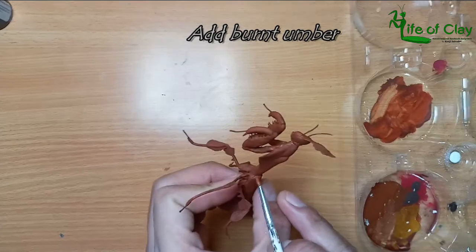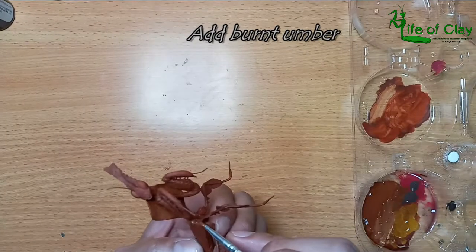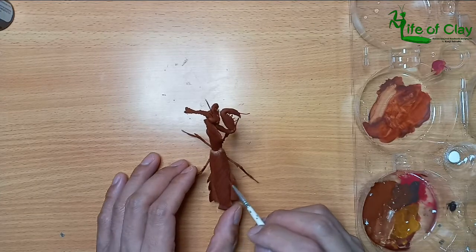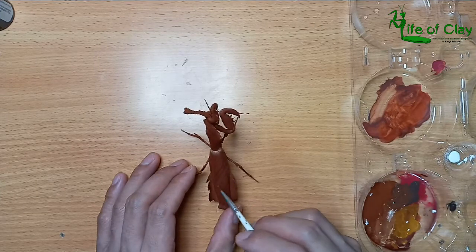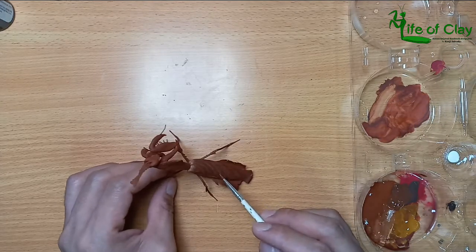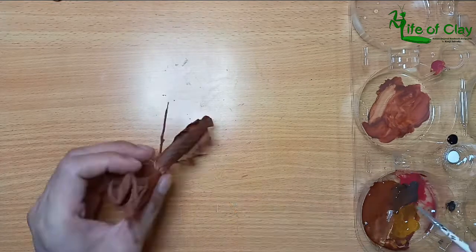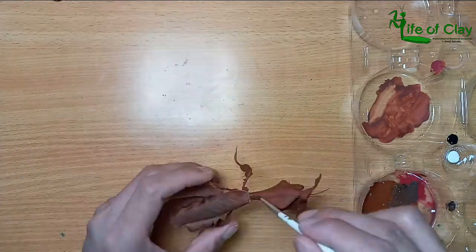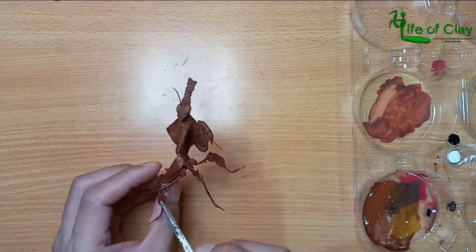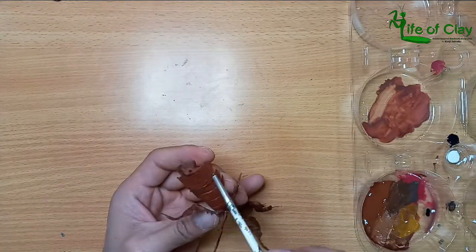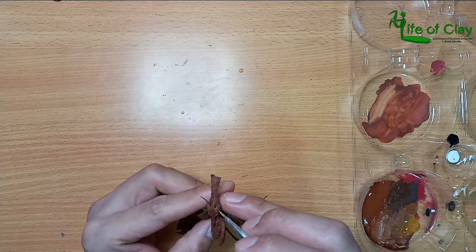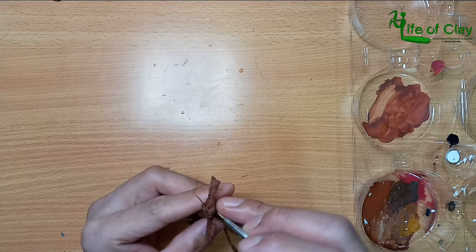And for the stripes and edges on her body, I add burnt amber. And for the next coating, I use burnt sienna and red. Painting the eyes with a little lighter yellow ochre and burnt sienna mix.